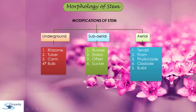Underground modifications are of four types: rhizome, tuber, corm and bulb. Subarial modifications are runner, stolon, offset and sucker. Areal modifications are tendril, thorn, phylloclade, cladode and bulbil.